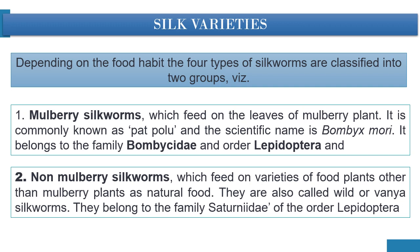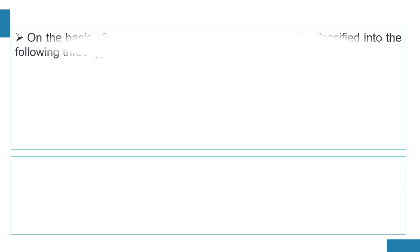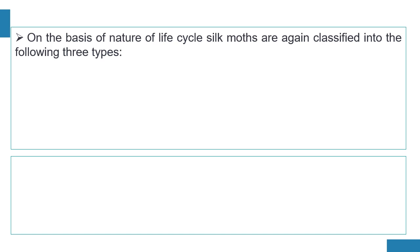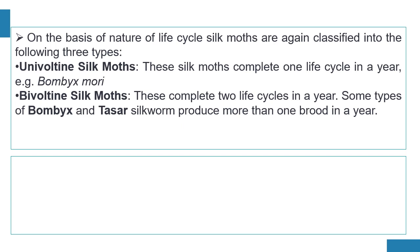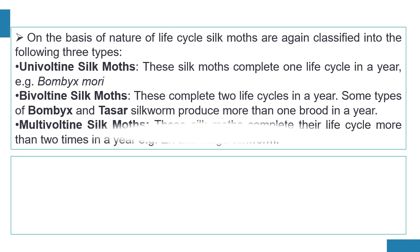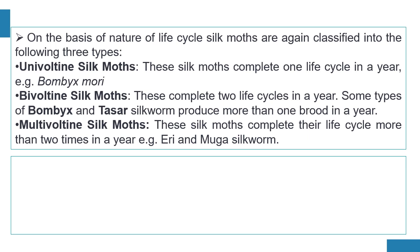Non-mulberry silkworms are also called wild or boino silkworms and belong to the family Saturniidae of the order Lepidoptera. On the basis of the nature of the life cycle, silkworms are further classified into three types: univoltine silkworms, which complete one life cycle in a year (e.g., Bombyx mori); bivoltine silkworms, which complete two life cycles in a year (some types of Bombyx and tassar silkworms); and multivoltine silkworms, which complete more than two life cycles in a year.